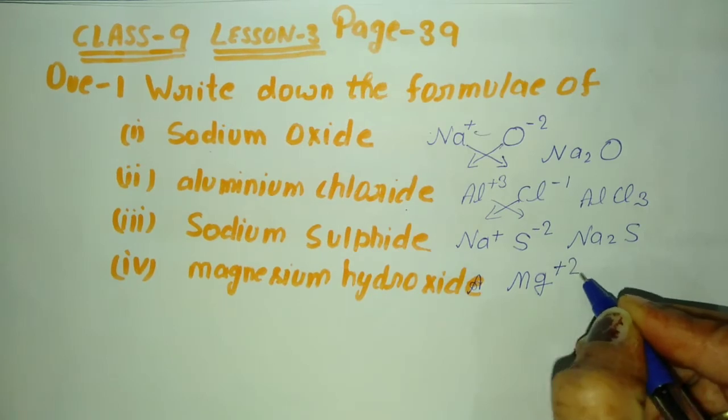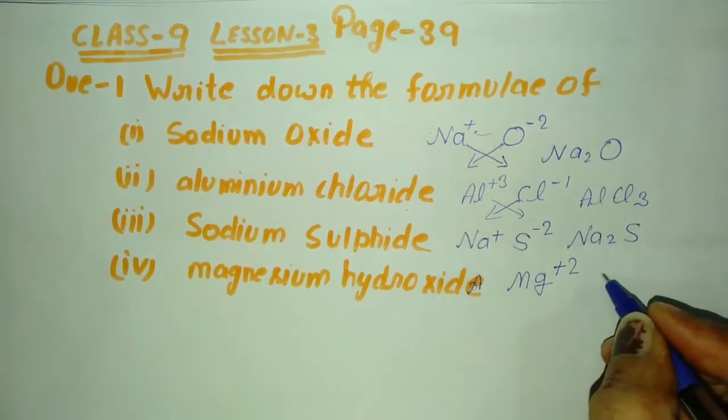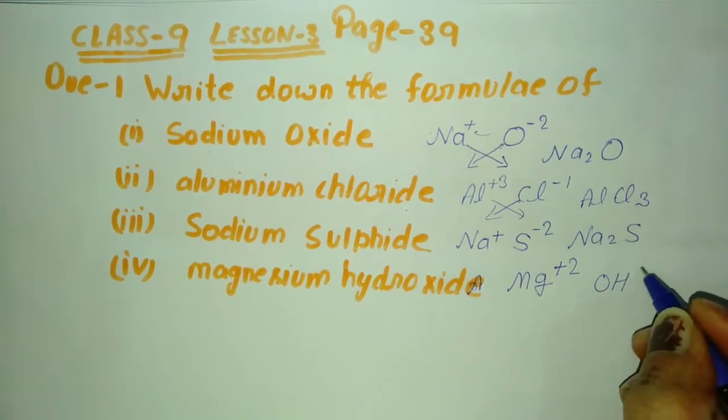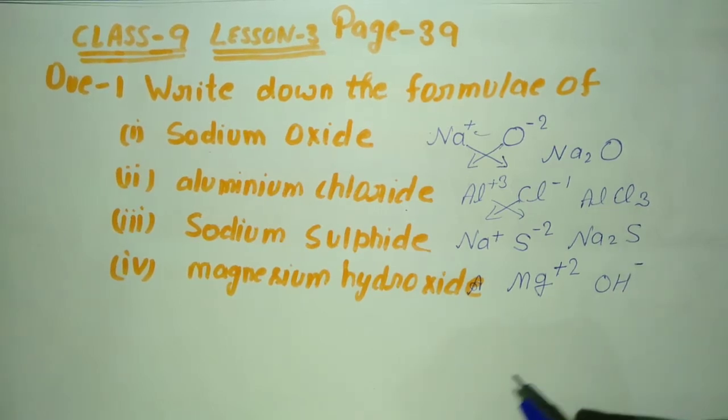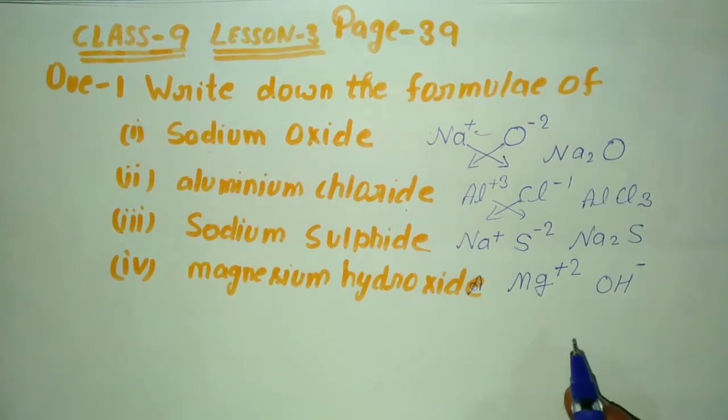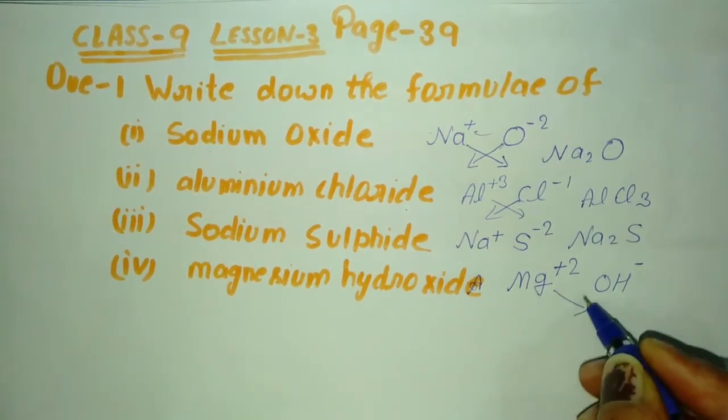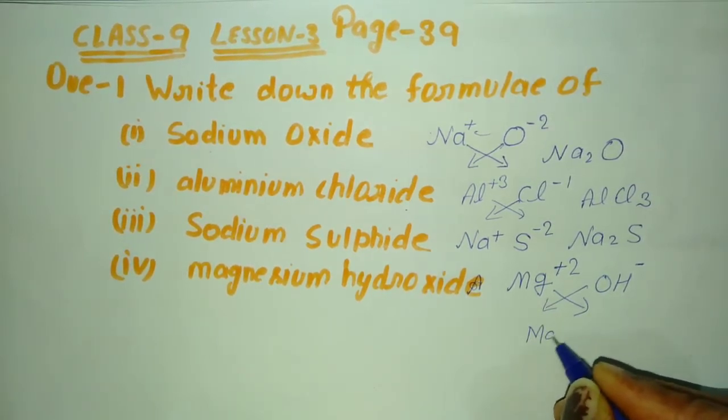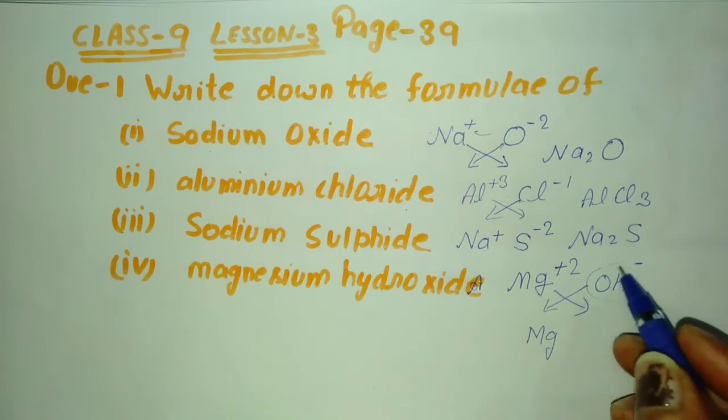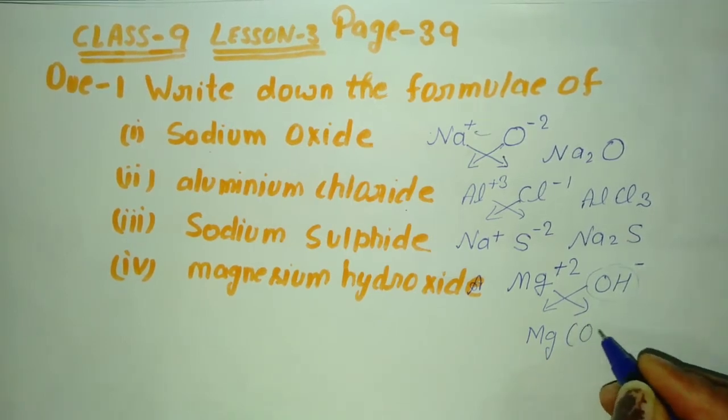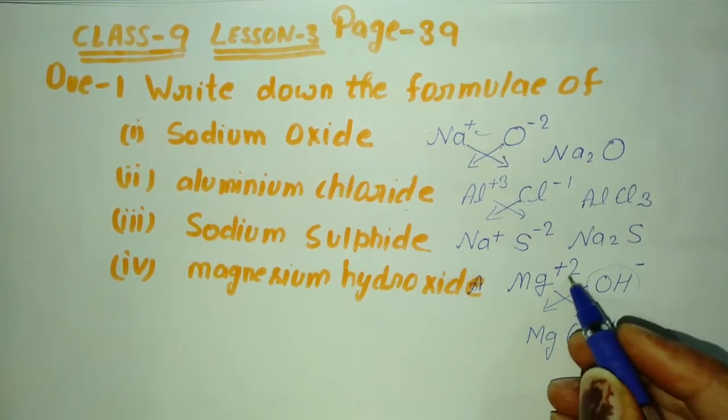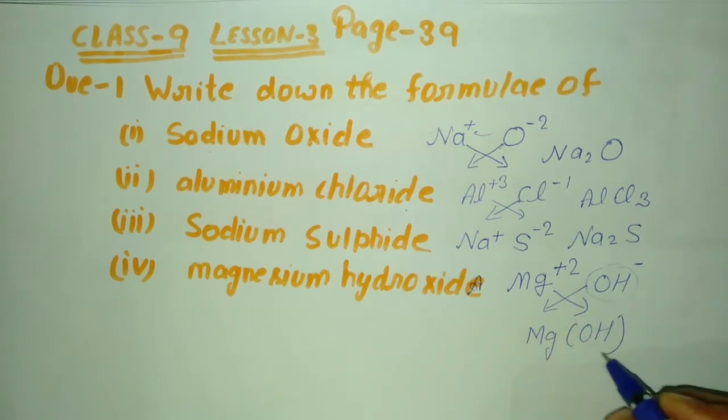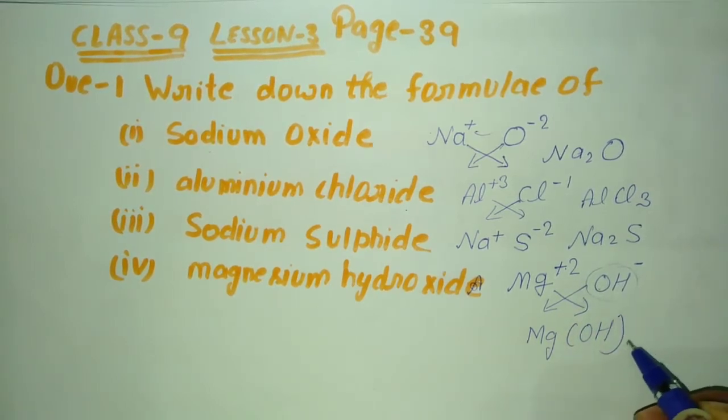And next, magnesium hydroxide. Magnesium is represented by Mg, and Mg has two positive charge. Hydroxide means OH, and OH has minus one. We cross multiply to get the formula Mg(OH)2. It is a compound, so we will write it in brackets and multiply the whole OH.